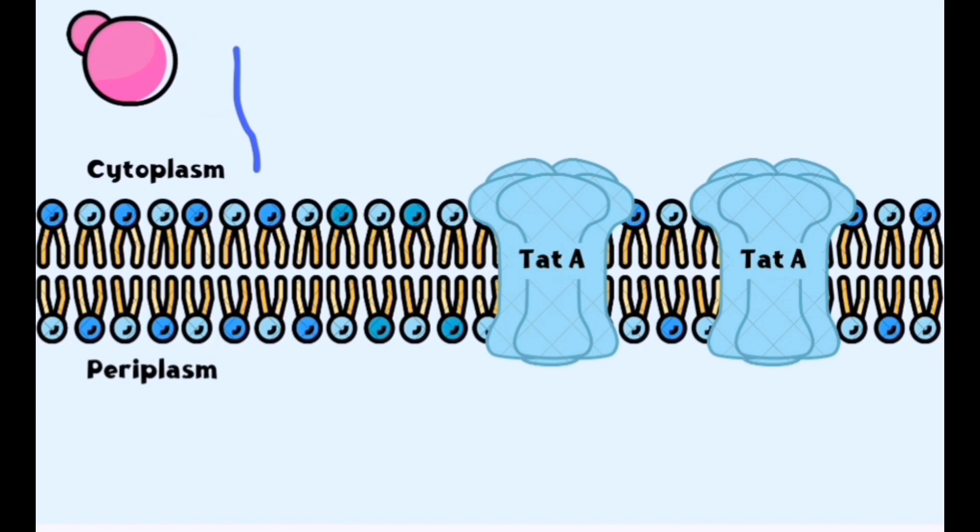Meticulously folding into its functional form. As the protein completes its folding process, it comes into contact with the watchful TAT-A and TAT-B subunits. These vigilant components recognize the distinctive twin-arginine signal sequence, setting in motion the events that trigger translocation.